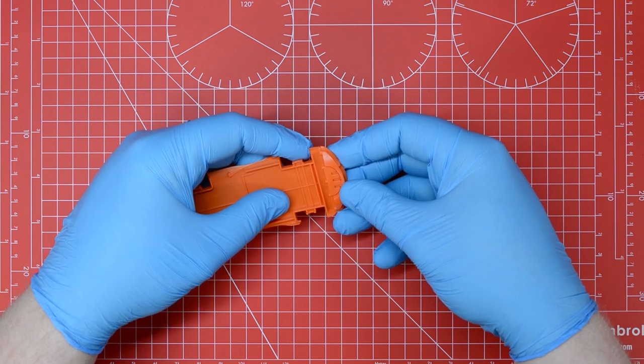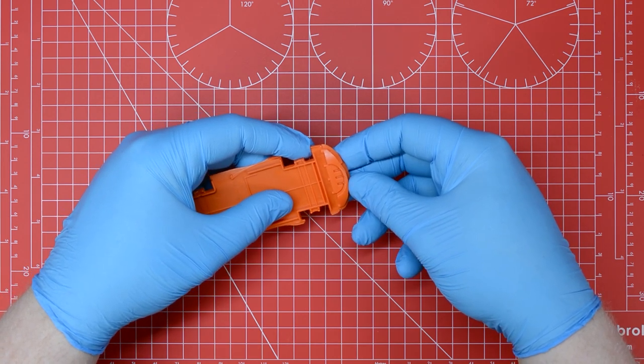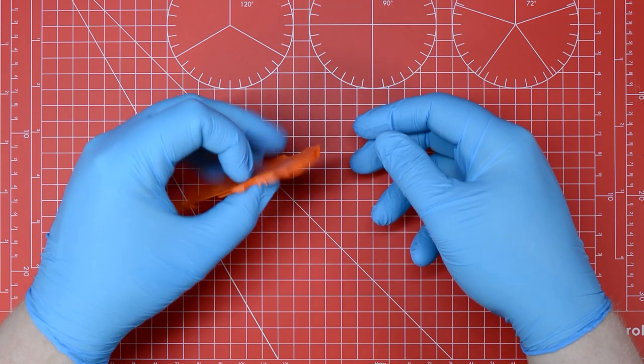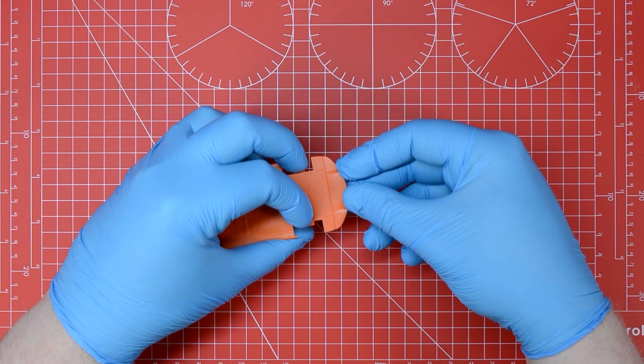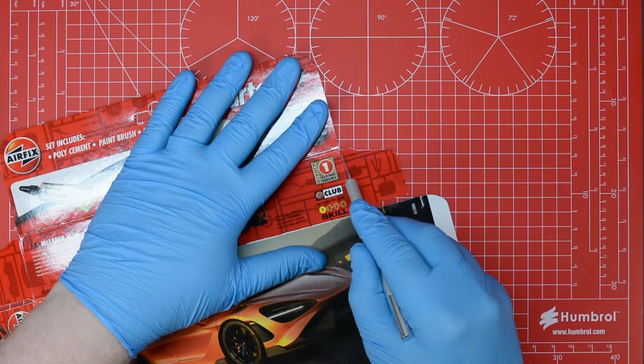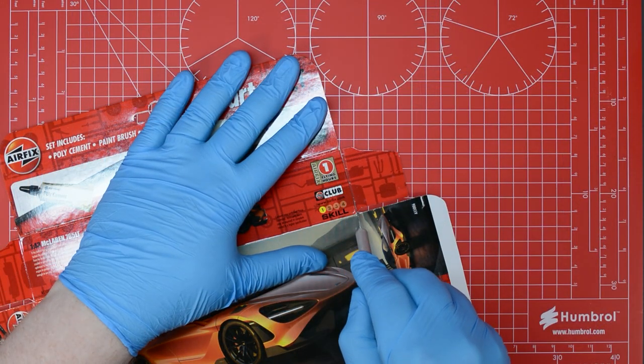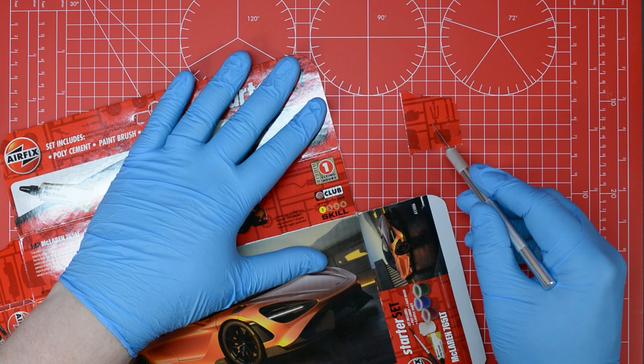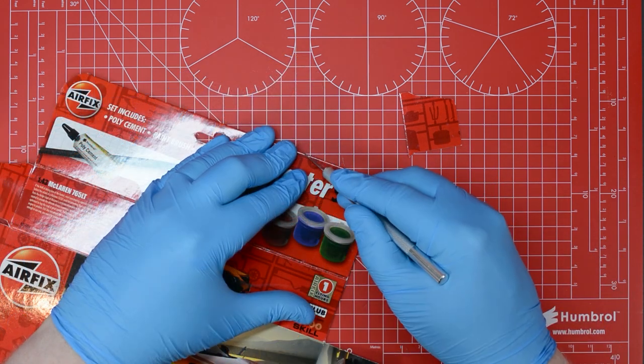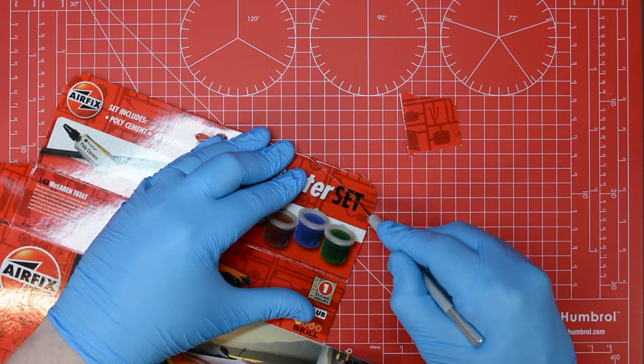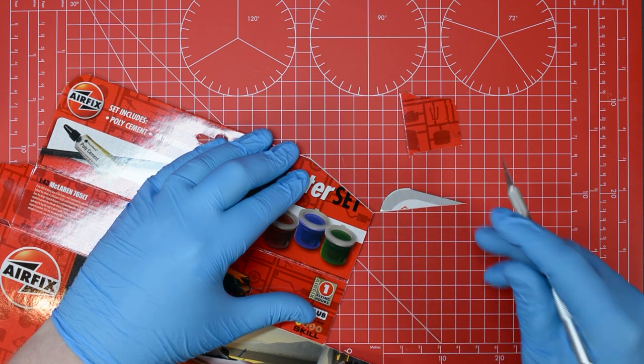Once we've got our first two parts cleaned up we can test the fit in a process commonly referred to as dry fitting where we simply put them together without any glue. Now we're ready to start gluing. We're going to cut a small piece of the kit box away to serve as a palette and cut the corner to serve as an applicator.